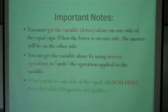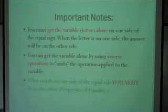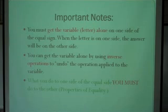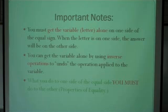The second note: you can get the variable alone by using the inverse operations to undo what's being done to the letter. And finally, the most important — what you do to one side of the equal sign, you must do to the other. Properties of equality.